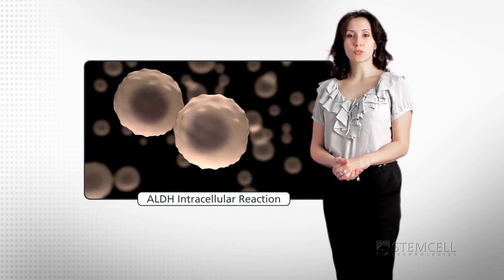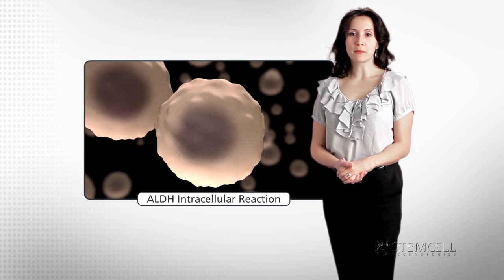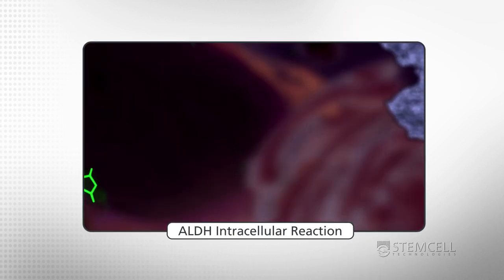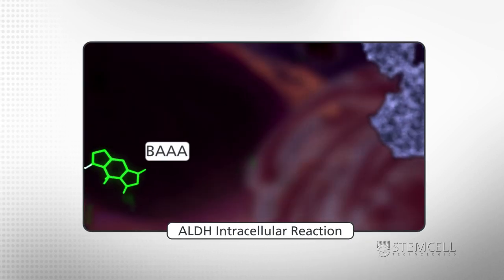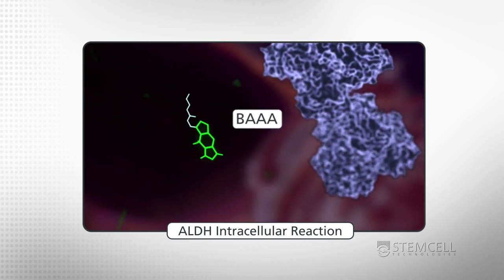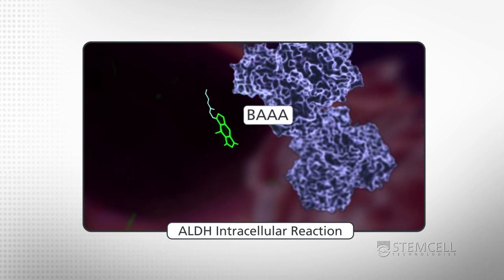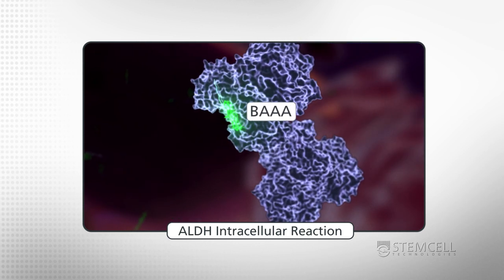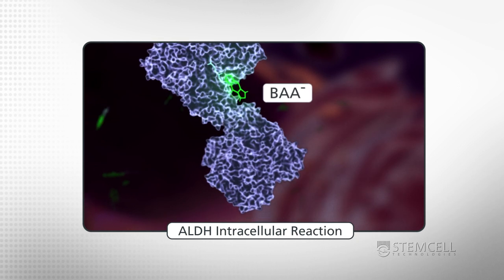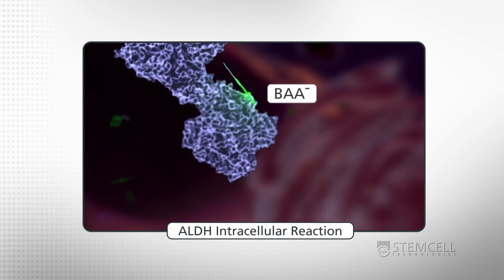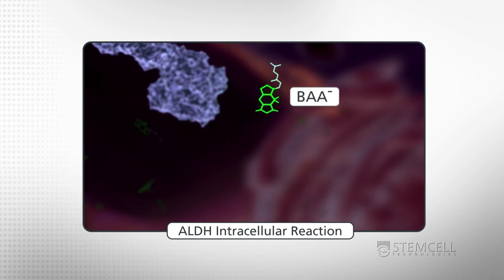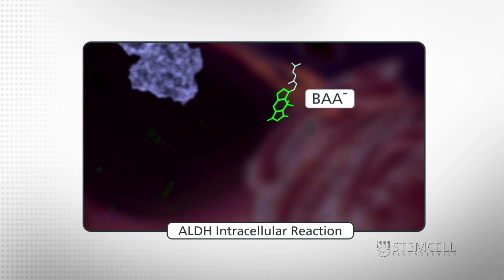During the assay, cells are treated with BODIPY aminoacetaldehyde that freely diffuses into cells and is selectively converted by ALDH to a non-toxic fluorescent compound, BODIPY aminoacetate. This substance is retained in the cells in the presence of an appropriate ABC transporter inhibitor.